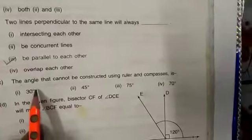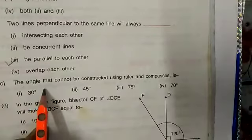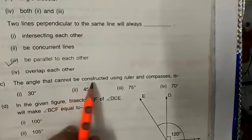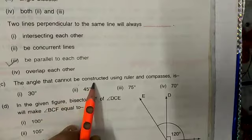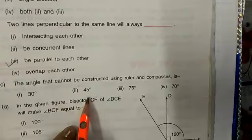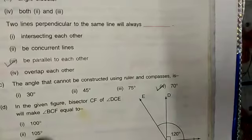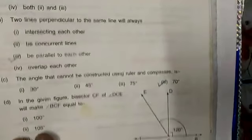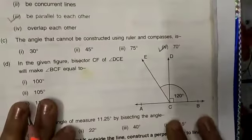Angle that cannot be constructed using ruler and compass. Only those angles are constructed using ruler and compass which are the multiples of 15. Here, 70 degrees angle which is not a multiple of 15. Next question.